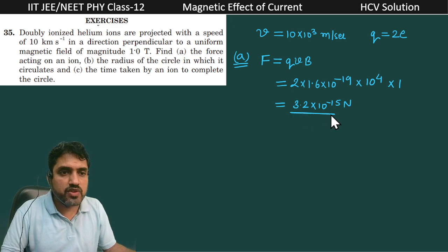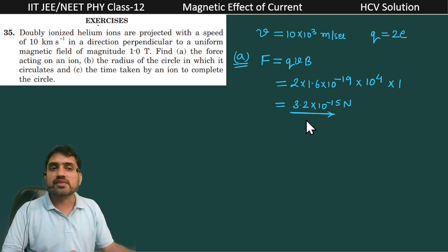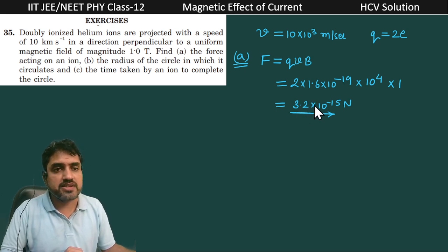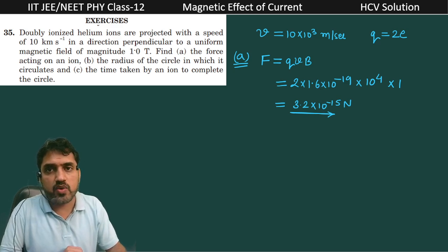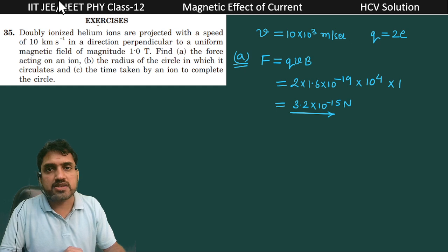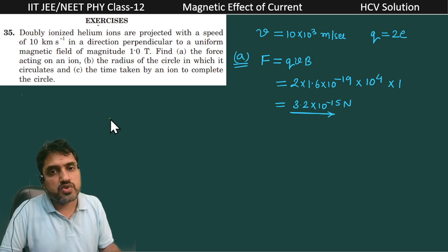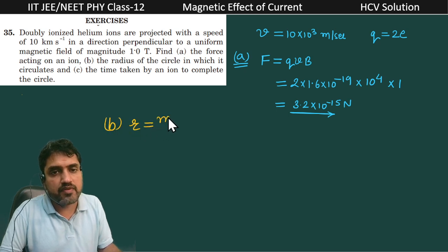That is minus 15 Newton, which is the force acting on this doubly ionized helium ion. Now the next part, part B, is the radius of the circle. So this radius R is equal to MV divided by QB.